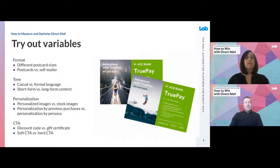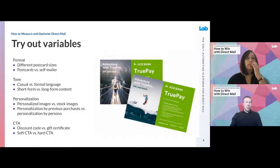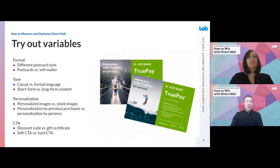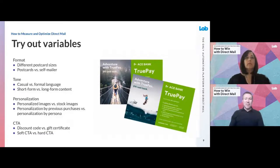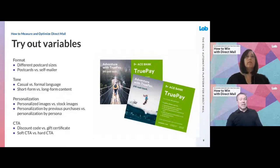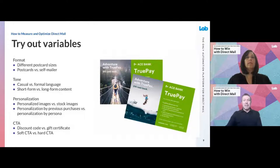And then we see folks experimenting with different types of offers — promo versus no promo, or a soft CTA like 'check out our new fall line' versus a hard CTA like 'sign up for this great Lob webinar.' These are all easily possible and measurable through the analytics methodologies I'll show here shortly.